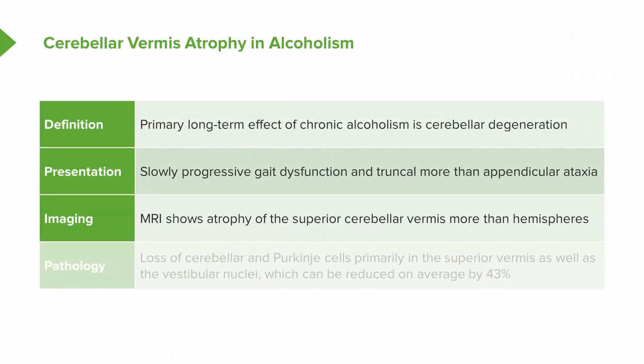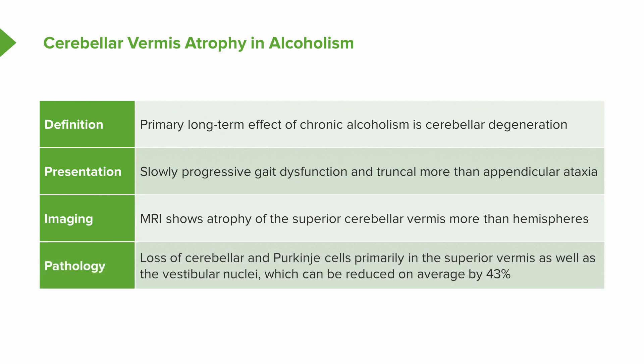On imaging, MRI shows atrophy diffusely across the cerebellum, but preferentially affecting the superior cerebellar vermis more so than the hemispheres. Pathologically, we see loss of cerebellar Purkinje cells primarily in the superior vermis, as well as the vestibular nuclei. This can result in eye movement dysfunction, as was present in this case, and can be seen in up to 43% of patients — so it's common and something we look for.